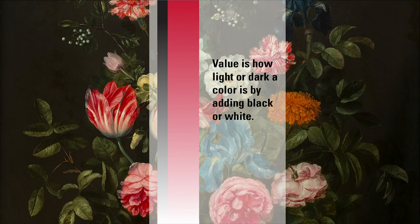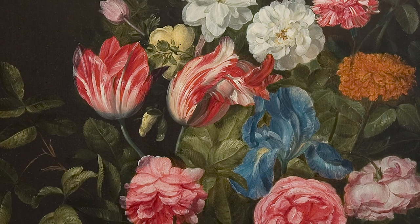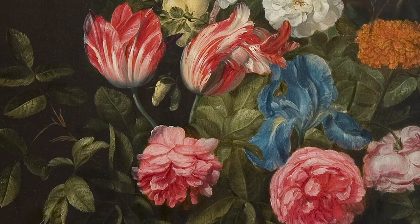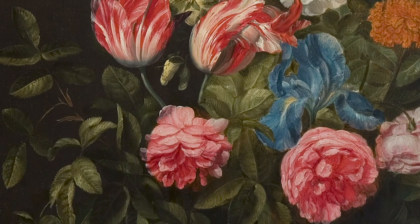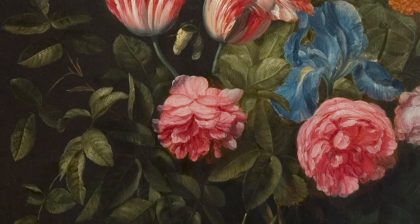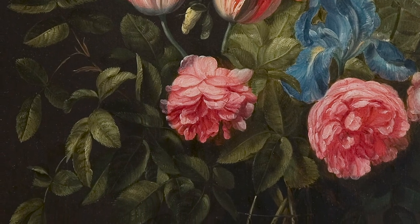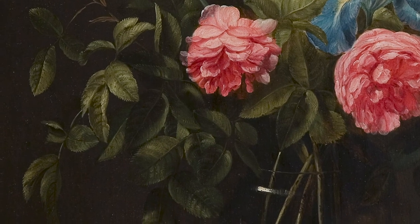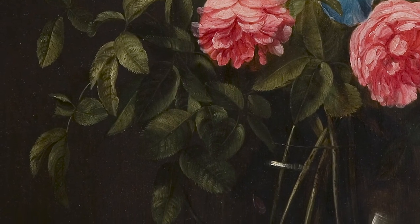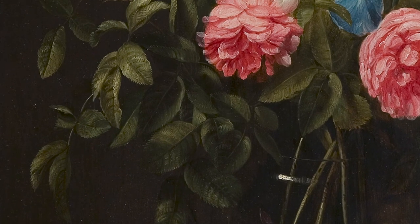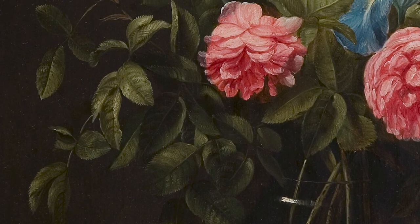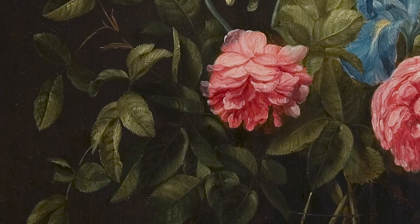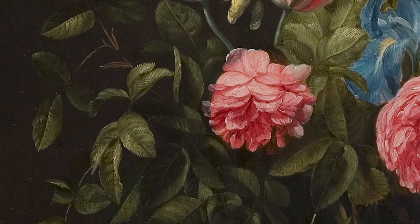Next we're going to discuss value. As a reminder, we define value as how light or dark a color is by adding black or white. Let's look at the leaves in the painting. All of them are green hues but there are many different colors of green. Do you see areas where there is dark green? What about light green? Can you point out which ones are different colors? Why do you think the artist chose to make some parts of leaves lighter than others? Value can help us understand where light is coming from and see where shadows fall. The dark value of green means there is less light in that area. The light value of green means there is more light in that area.